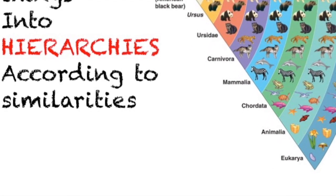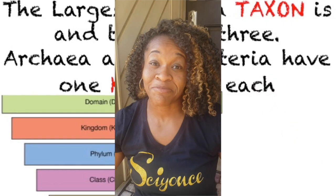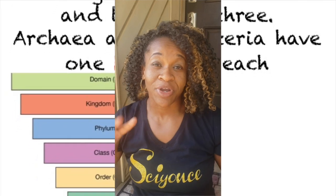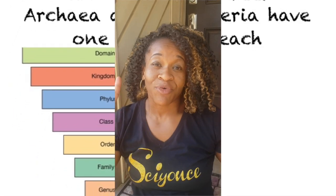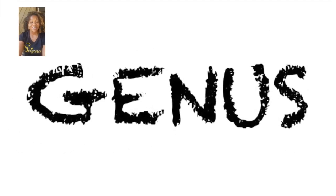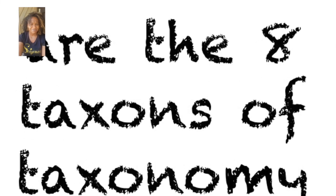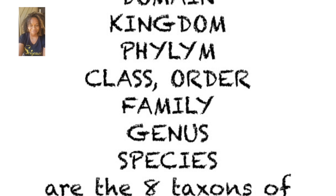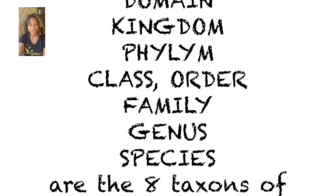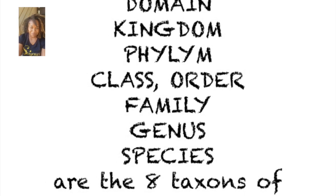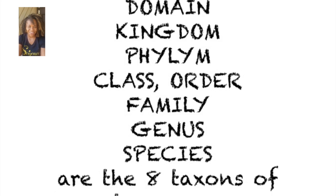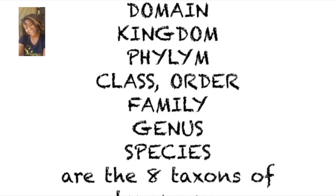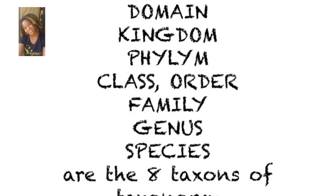Taxonomy groups living things into hierarchies according to similarities. Domain is the biggest taxon and there are three: Archaea and Eubacteria have one kingdom each. Domain, Kingdom, Phylum, Class, Order, Family, Genus, Species — the eight taxons of taxonomy.